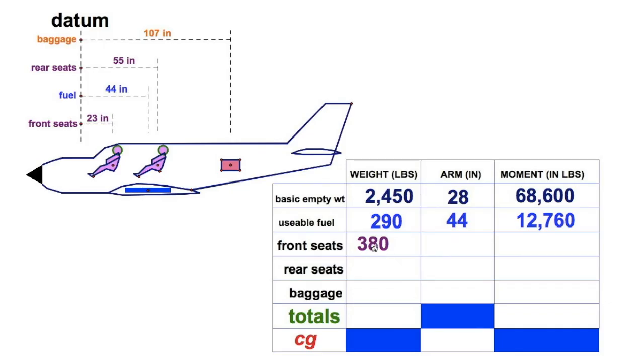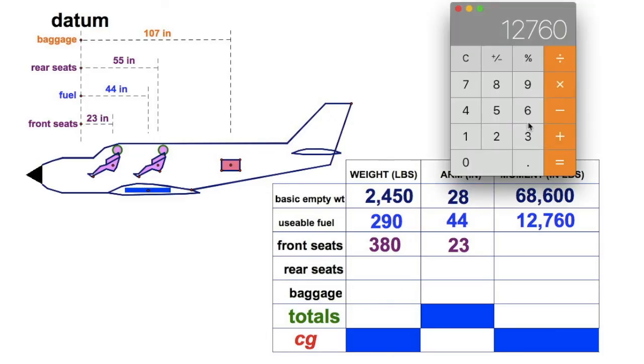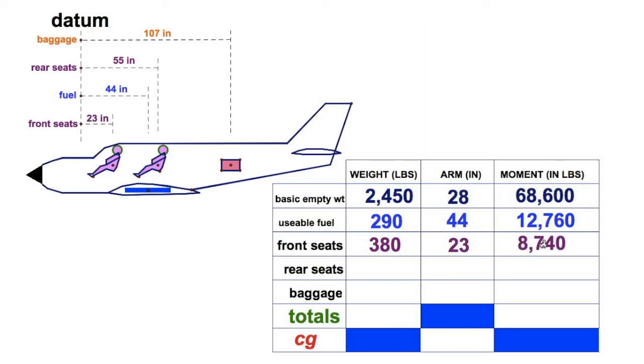We're going to say the two front seat passengers, the driver and maybe your right seat passenger, or maybe two pilot crew. You've got 380 pounds, pretty reasonable for two adults, 23 inches after the datum. You're going to take 380 times 23, equals 8,740. Mark that down.